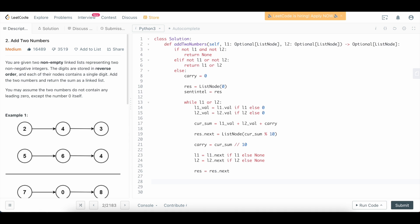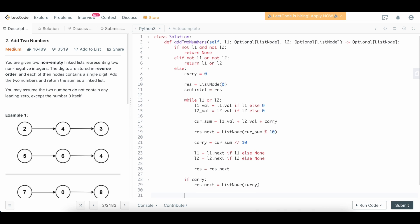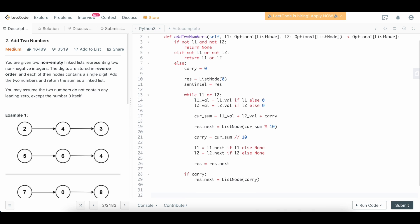So we're going to say if carry, we're going to say res.next equals ListNode, and we're going to say whatever the carry value is. And then at this point we are done. We can simply return sentinel, which remember the sentinel we set it equal to the res, so that way when we call sentinel—